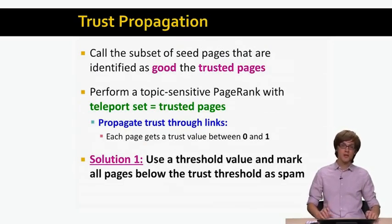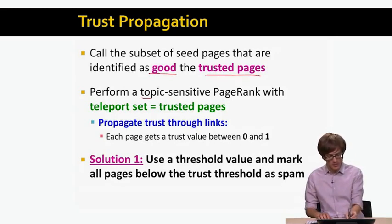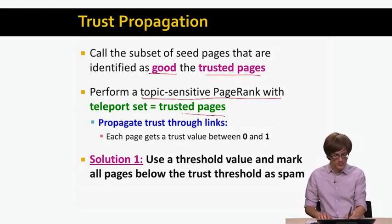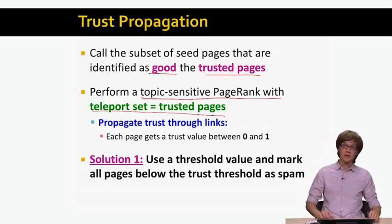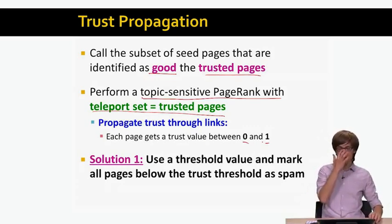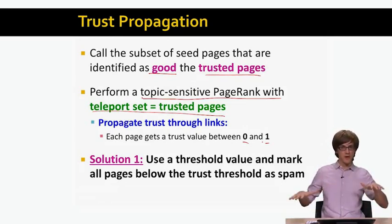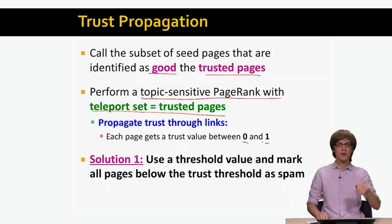We perform trust propagation: we identify good seed pages as trusted pages, then perform topic-sensitive PageRank with the teleport set being the trusted pages, propagating trust across the links of the graph. Trust takes values between 0 and 1. One way to identify spam is to compute the personalized PageRank score with the teleport set as the trusted pages, and if a page's score is smaller than some threshold, we cut that page away and label it as spam.